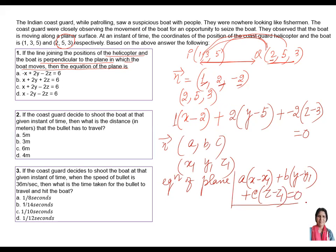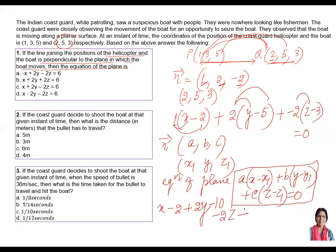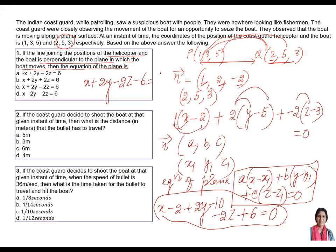This is a very fundamental concept. Now simplifying: x − 2 + 2y − 10 − 2z + 6 = 0, which gives x + 2y − 2z − 12 + 6 − 6 = 0 … wait, simplifying correctly gives x + 2y − 2z = 6. So the answer to part one is x + 2y − 2z = 6, which corresponds to option B.